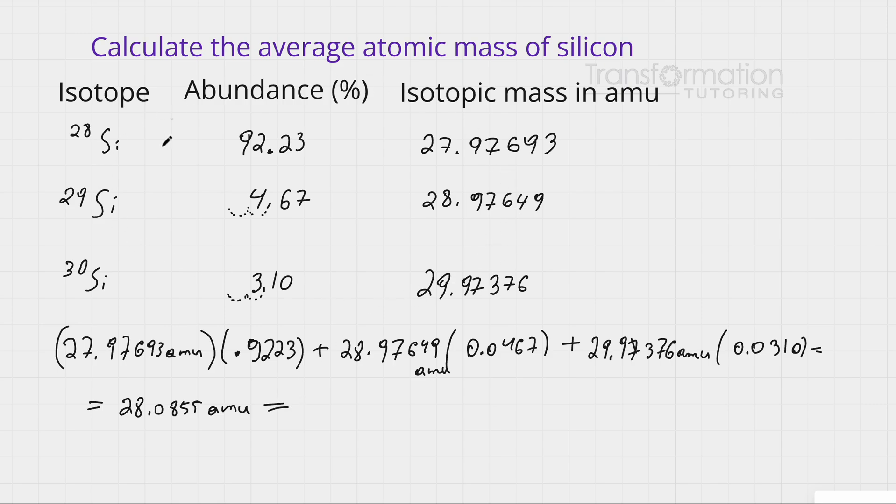Looking at our chart, we will look at the number that has the least significant figures. This one has four, this one has three, this one has three. The numbers with the least significant figures are these two—they have three significant figures.